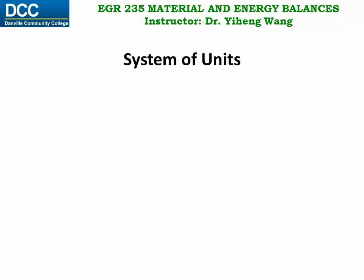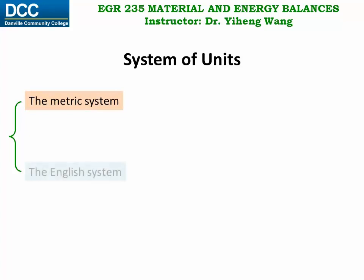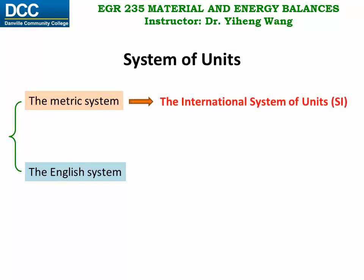In general, the unit systems used in the United States can be divided into two major categories: the metric system based on meter, and the English system based on foot and pound. The most important metric unit system is the International System of Units, also known as the SI unit system.